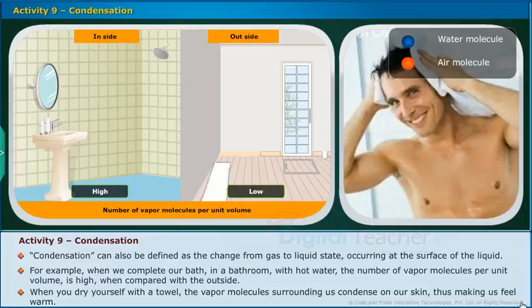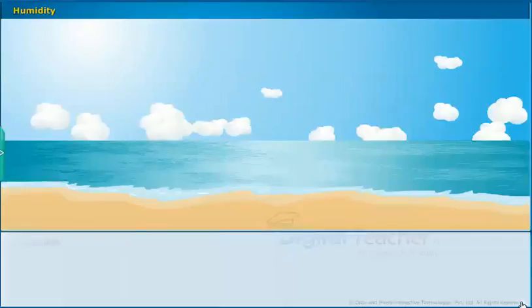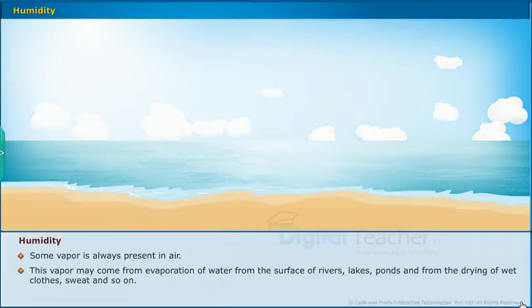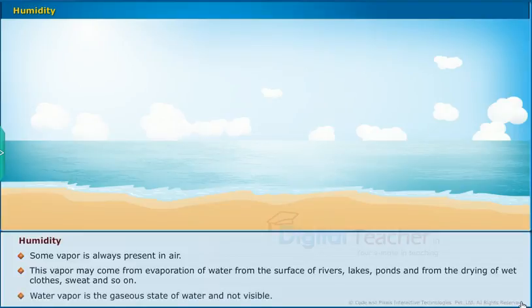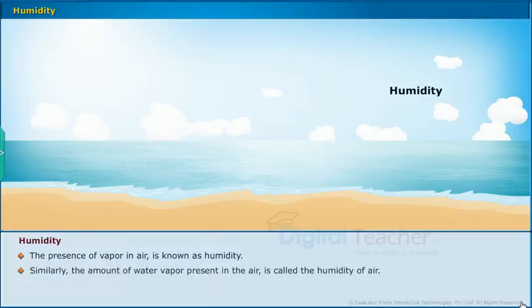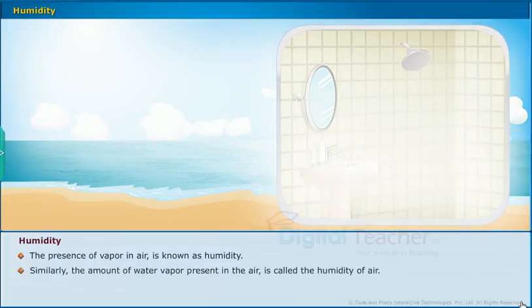Let us learn about humidity. Some vapor is always present in air — this vapor may come from evaporation of water from the surface of rivers, lakes, ponds, and from the drying of wet clothes, sweat and so on. Water vapor is the gaseous state of water and is not visible. The presence of vapor in air is known as humidity. The amount of water vapor present in the air is called the humidity of air.